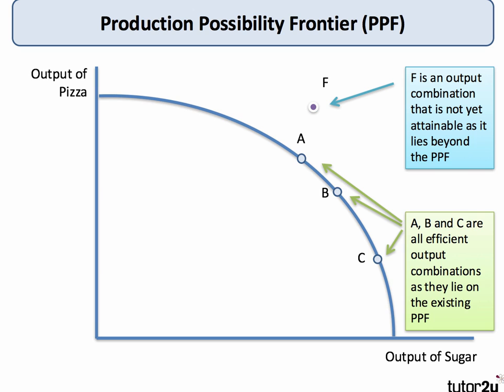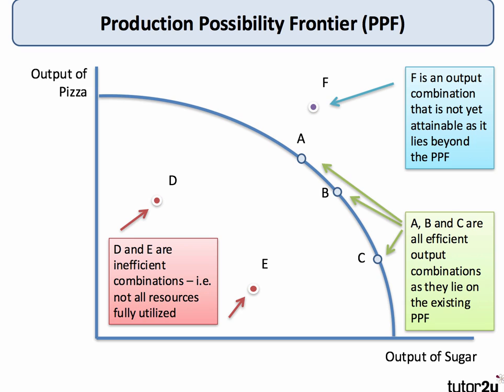Reaching combination F would require the PPF to shift outwards. Combinations labelled D and E lie within the PPF — we call those inefficient combinations because not all resources are being fully utilised or they're being used in an inefficient way. We could move, for example, from point E to point B and end up with more output of both sugar and pizza.